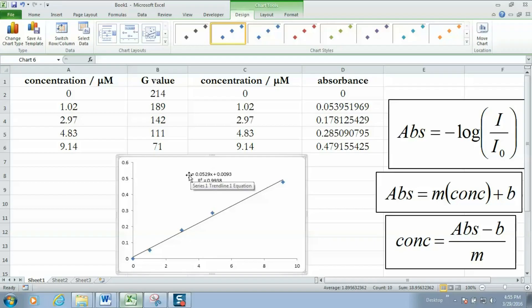The equation for the line y equals mx plus b can be read as absorbance is equal to m the slope which is 0.0529 times x which is the concentration plus b the intercept which is 0.0093. A little bit of algebra on this equation here converts it into an equation that we can use to find the concentration of our unknown.